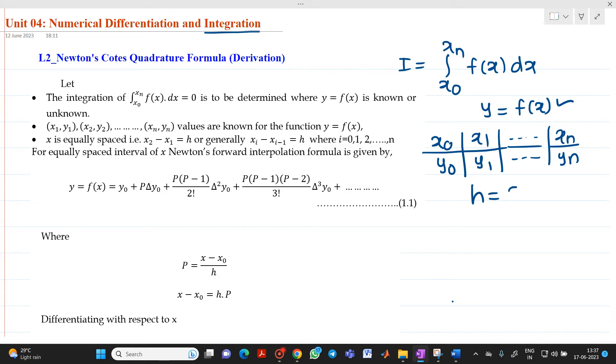x is equally spaced here, which means h will be equal to x1 minus x0, where h is the step size. The difference between x values will be the same. Whenever we have equally spaced data, then with the help of Newton's forward interpolation formula,